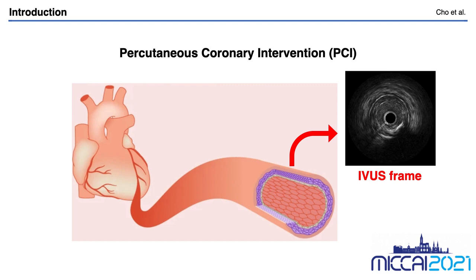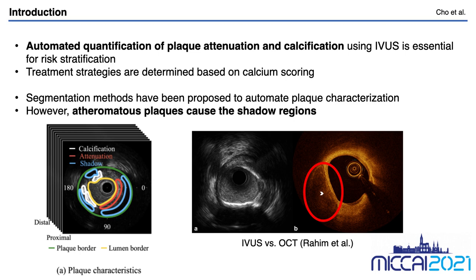Percutaneous Coronary Intervention, or PCI, refers to a family of invasive procedures used upon coronary arteries. By restoring blood flow, the treatment can improve symptoms of blocked arteries, such as chest pain or shortness of breath. Automated quantification of plaque attenuation and calcification using IVUS is essential for risk stratification. In calcified plaques that can cause stent under-expansion, treatment strategies are determined based on calcium scoring via calcified plaque characteristics.